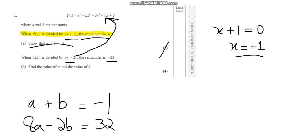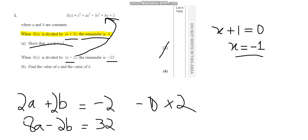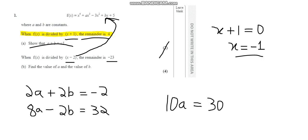I'll set up the simultaneous equations. Our first equation is a plus b equals minus 1, and the second is 8a minus 2b equals 32. To eliminate b, I'll multiply the first equation by 2, giving 2a plus 2b equals minus 2. Now adding both equations: 2a plus 8a gives 10a, and minus 2 plus 32 gives 30. So 10a equals 30, and dividing both sides by 10 gives a equals 3.